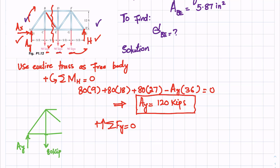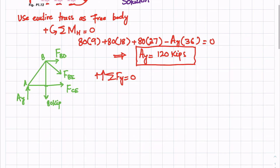After cutting the truss, the free body diagram shows points A, B, and C. The forces in the cut members are FBD, FBE, and FCE. We are interested in finding FBE.